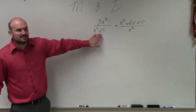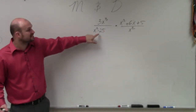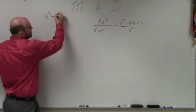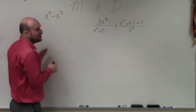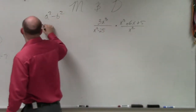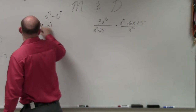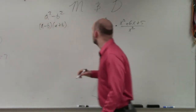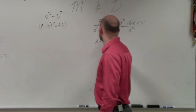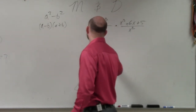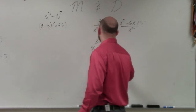Well, I can't factor out anything in common here, but I do notice that this is the difference of two squares. The difference of two squares is when you have a square term minus another square term — you can factor that to (a minus b) times (a plus b). So if I factor this, I have 3x cubed divided by (x minus 5) times (x plus 5).